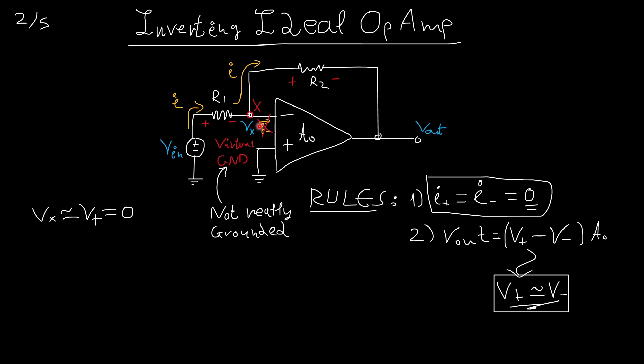We call this point a virtual ground because it always has a voltage of zero. This is not actually grounded. When you have a more complex configuration over here, you might be tempted to say that this is parallel to some resistors that are pointing to the ground. This is not true. This point is not actually grounded. It just means that the voltage here is zero.